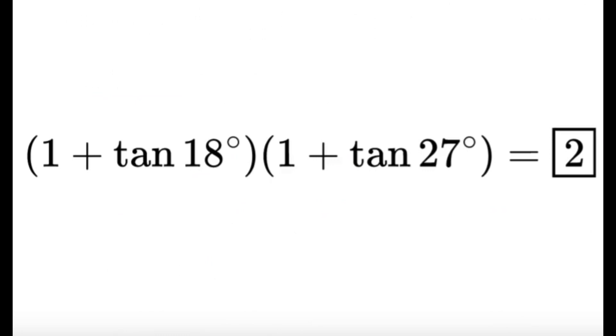The answer is simply equal to 2. So, 1 plus tangent 18 degrees times 1 plus tangent 27 degrees, that's going to be simply equal to 2. And that's the product of a very nice observation.